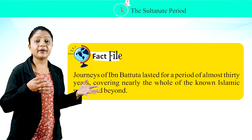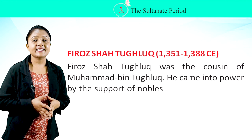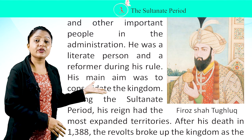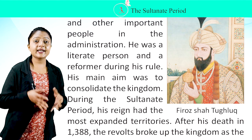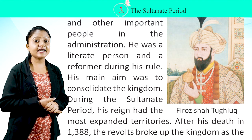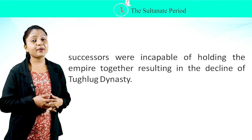Firoz Shah Tughlaq, 1351–1388 CE. Firoz Shah Tughlaq was the cousin of Muhammad bin Tughlaq. He came to power with the support of nobles and other important people in the administration. He was a literate reformer whose main aim was to consolidate the kingdom. During the Sultanate period, his reign had the most expanded territories. After his death in 1388, revolts broke up the kingdom as his successors were incapable of holding the empire together, resulting in the decline of the Tughlaq Dynasty.